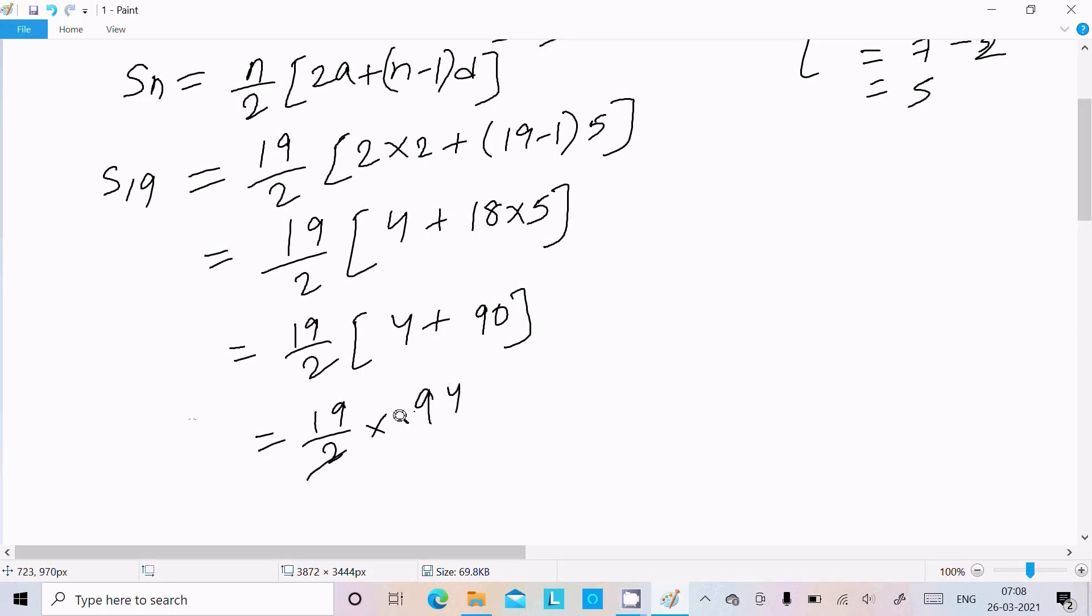Now next is 19 divided by 2 times 94. It cancels by 2, 94 divided by 2 is 47. So here I am getting 19 into 47. So 47 times 19: 47 times 9 is 423, 47 times 1 is 47. Now next is 7 times 9 is 63, 4 plus 6 is 10. The value comes 893.